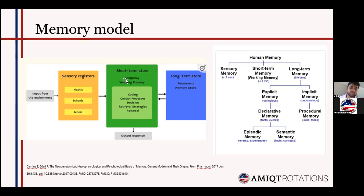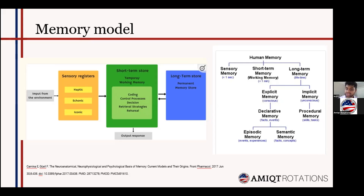The short-term memory interacts with the long-term memory storage — it sends information and can add new information, and at the same time from the long-term storage we can retrieve information into the short-term memory. The long-term memory stores information for a long period of time, potentially a lifetime. We think the neocortex is the primary storage for long-term memory. This information can be retrieved unconsciously — called implicit memory, for example recognizing faces from the news — or it can be a conscious decision, called explicit memory.